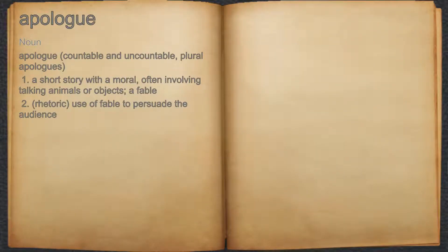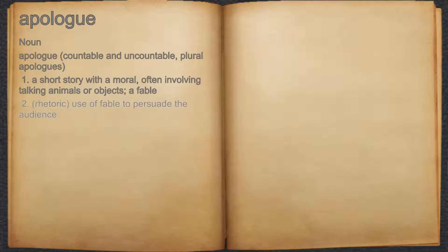Apologue. Noun. 1. A short story with a moral, often involving talking animals or objects; a fable. 2. Rhetoric: use a fable to persuade the audience.